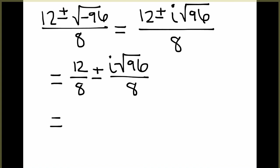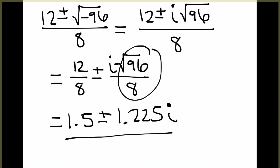you can divide 12 divided by 8, gives you 1.5. And then here, I just would type this into my calculator. The square root of 96 divided by 8 gives us an approximation of 1.225i. For me, that's fine if we just do an approximation at this point. We can look further into getting exact values in class if you want.